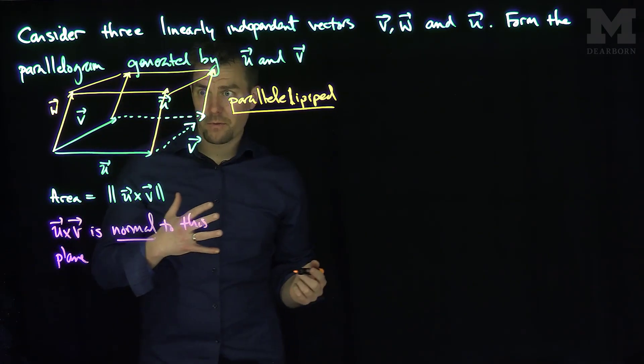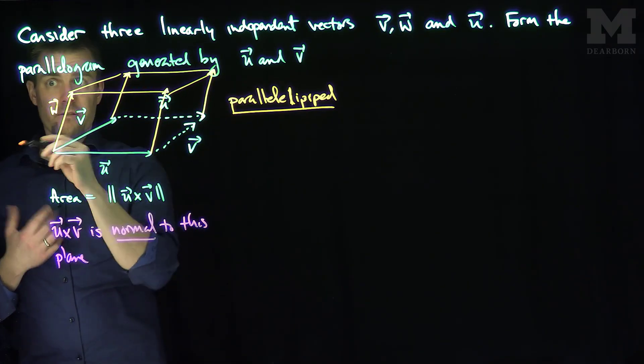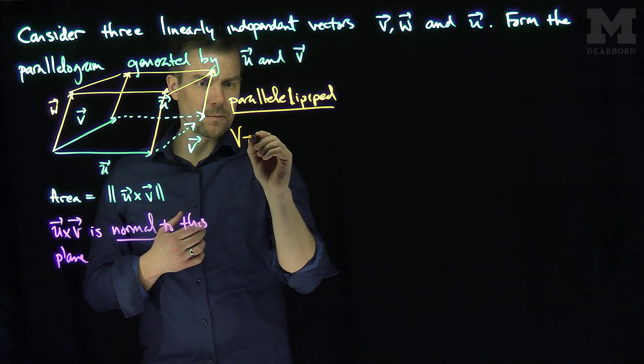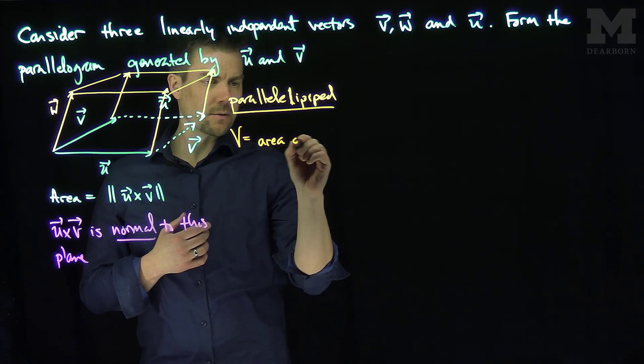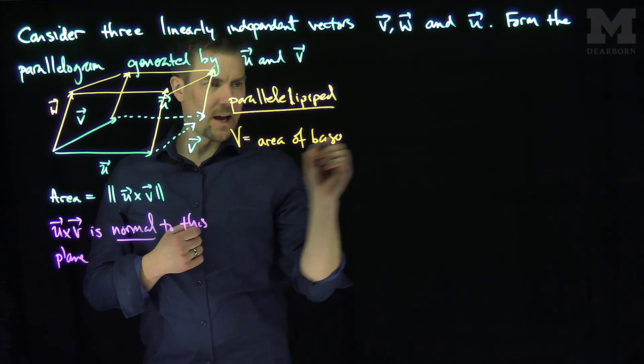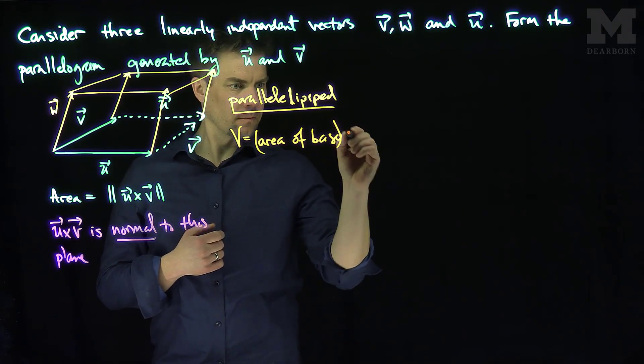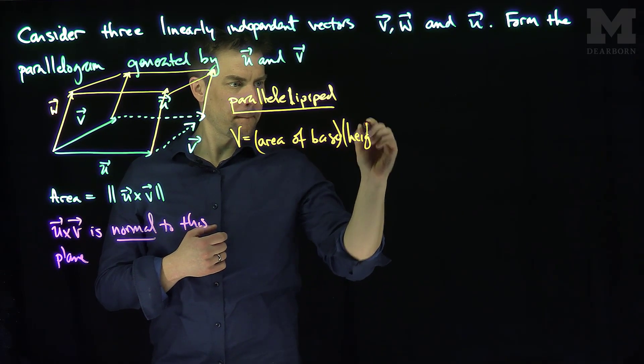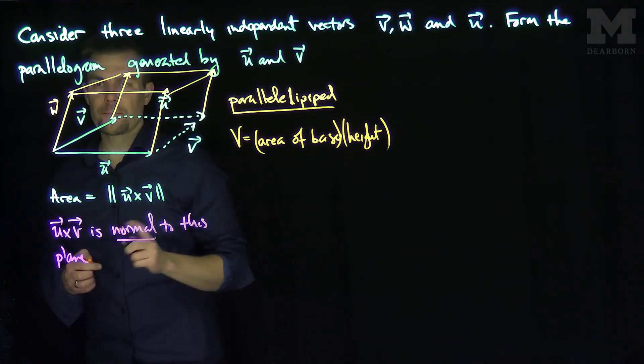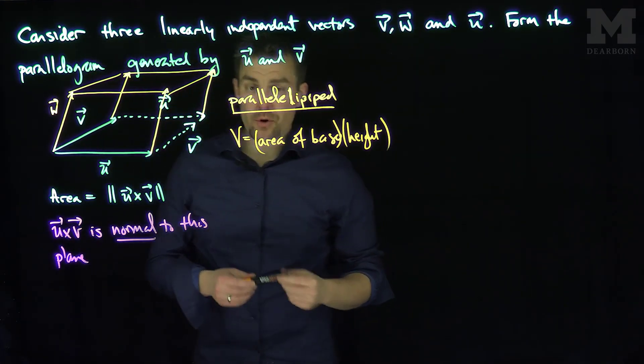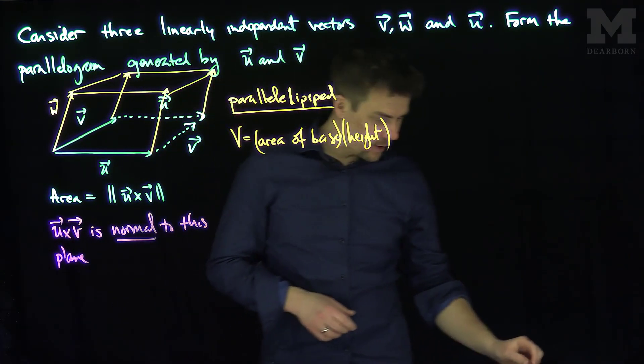Now, the question becomes, how do I find the volume of this? Well, it's going to be the area of the base times the height. So the volume is going to be the area of the base times the height. From classical geometry, we know what the area of the base is.